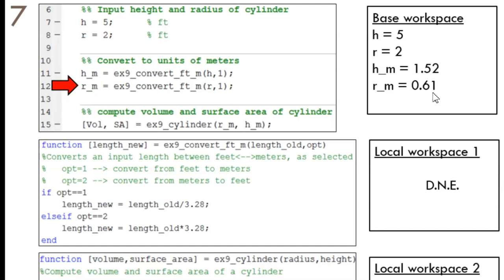Notice the flexibility of the function. Within the function, it uses general variable names, like length new. But when called for a specific situation, the results can have a more specific meaning, such as radius in meters.